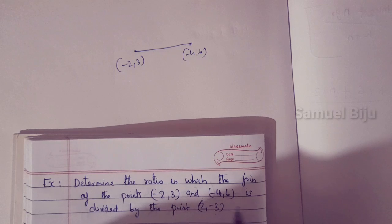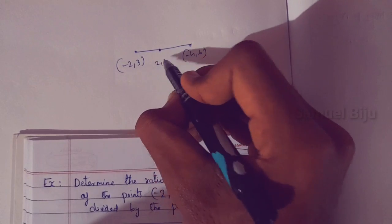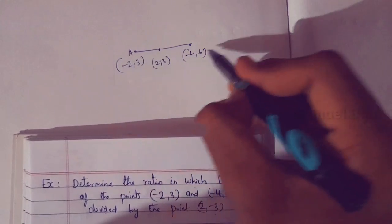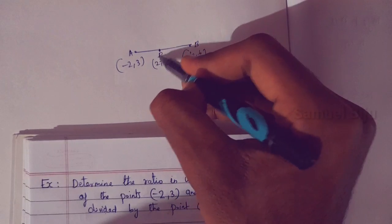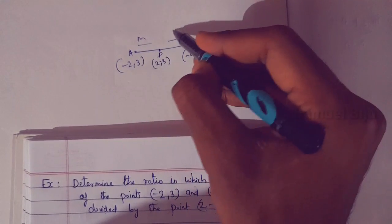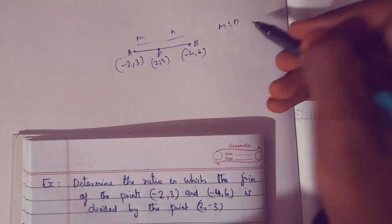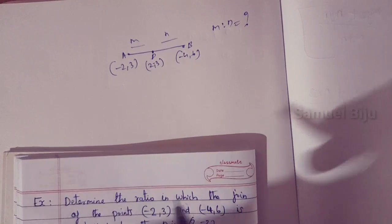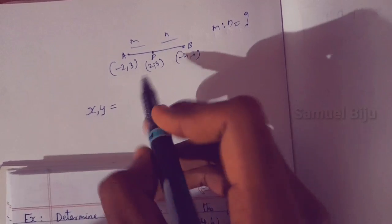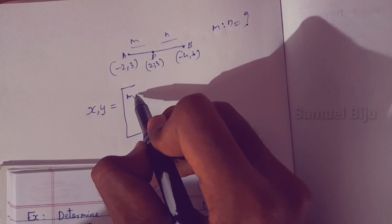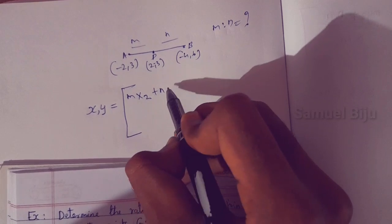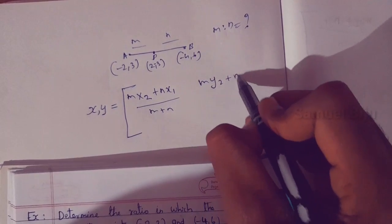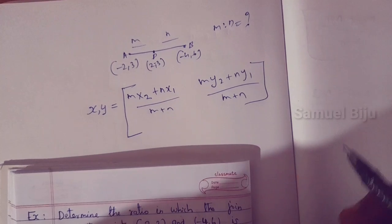The point (2, -3) divides and splits. We label the points A and B, and assign the ratio as m to n. We will apply the section formula equation: x equals m into x2 plus n into x1 divided by m plus n.